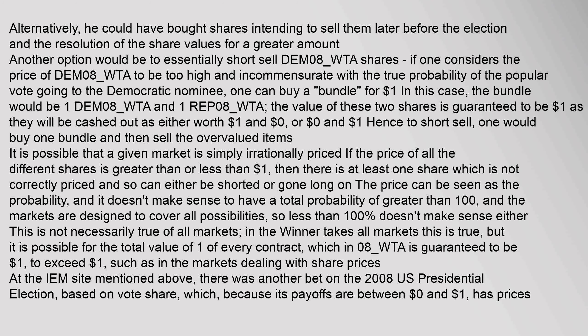Another option would be to essentially short sell DEM08-WTA shares. If one considers the price of DEM08-WTA to be too high and incommensurate with the true probability of the popular vote going to the Democratic nominee, one can buy a bundle for $1. The bundle would be one DEM08-WTA and one REP08-WTA. The value of these two shares is guaranteed to be $1, as they will be cashed out as either worth $1 and $0, or $0 and $1. Hence, to short sell, one would buy one bundle and then sell the overvalued items.